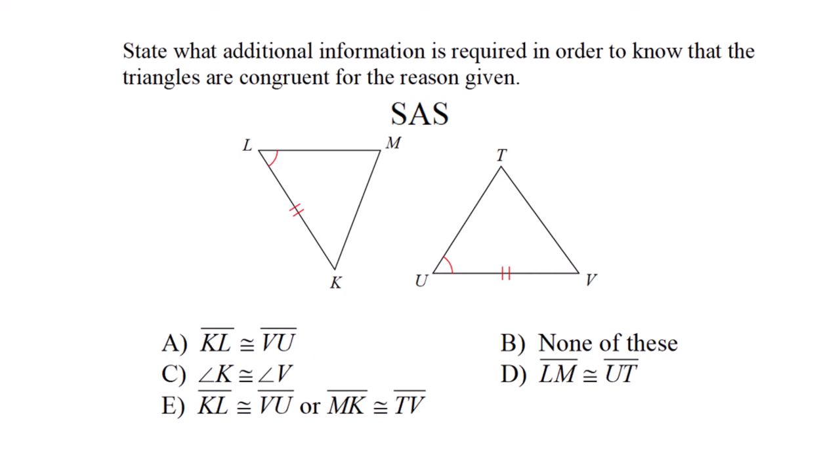State what additional information is required for the triangles to be congruent using side angle side. I see a congruent angle and a congruent side. For side angle side, the angle must be between congruent sides. Side LM must be congruent to side UT. The answer is D, LM congruent to UT.